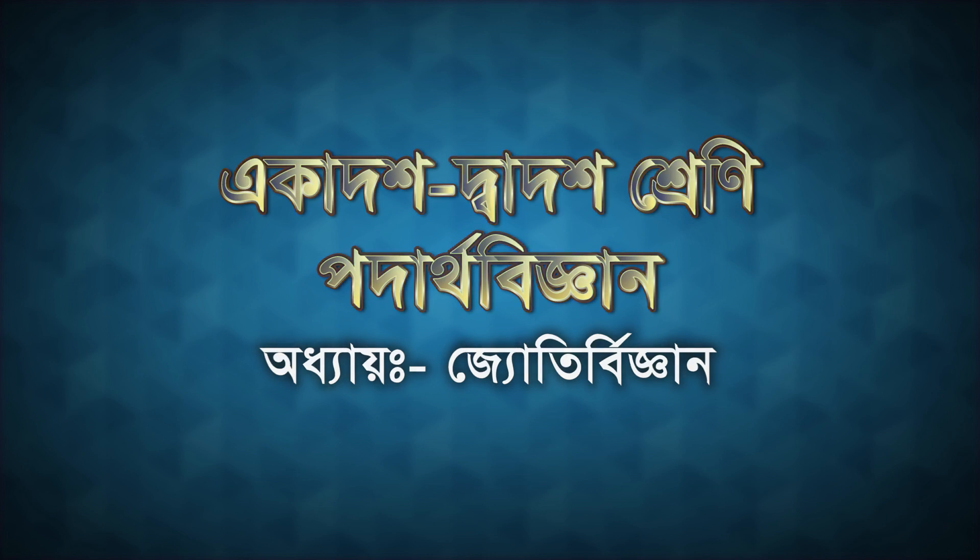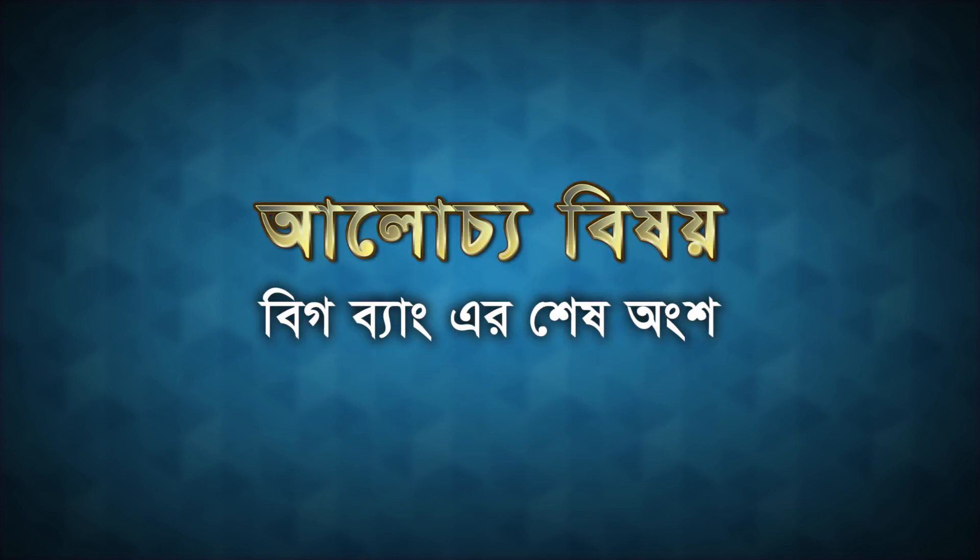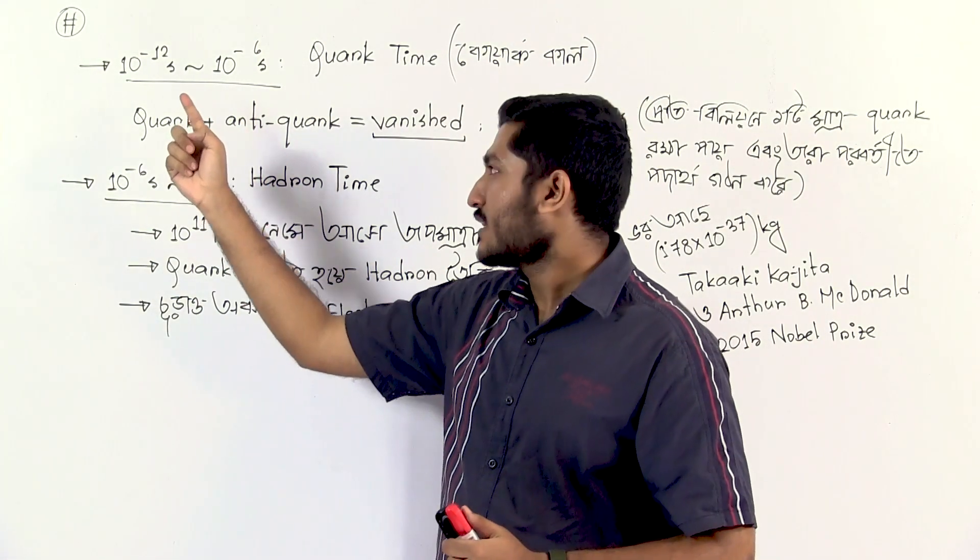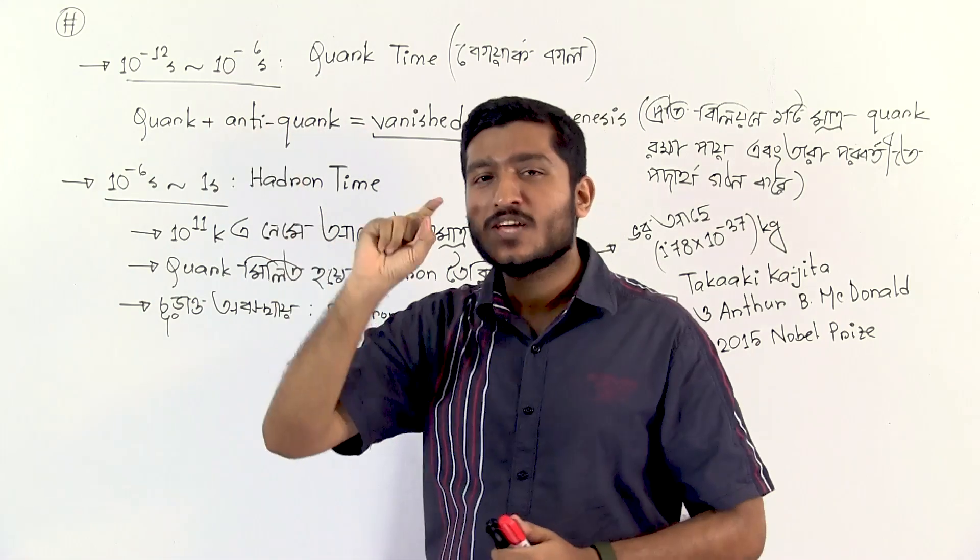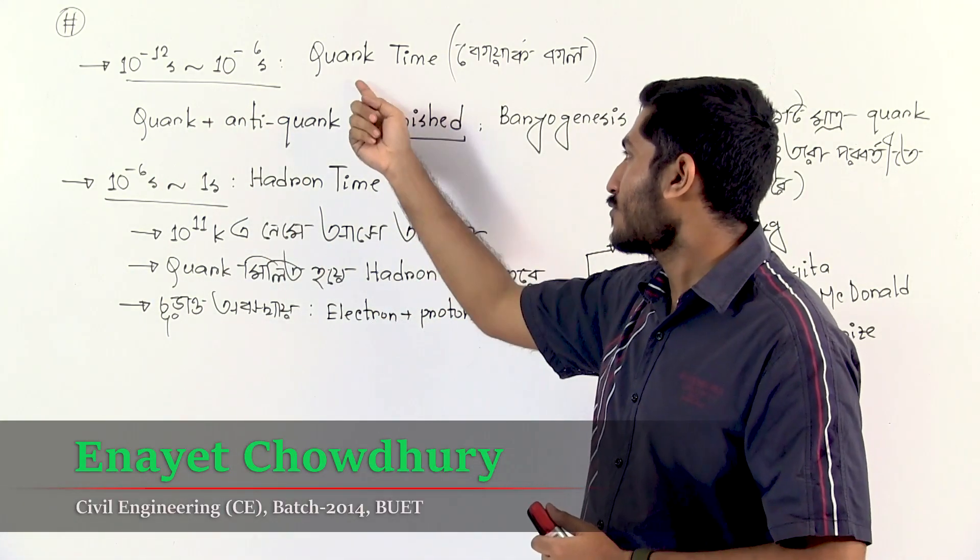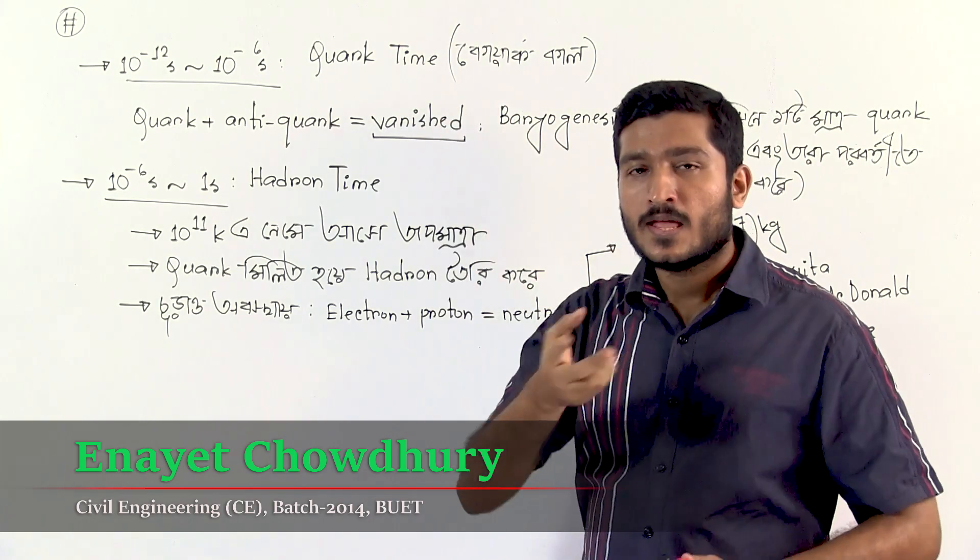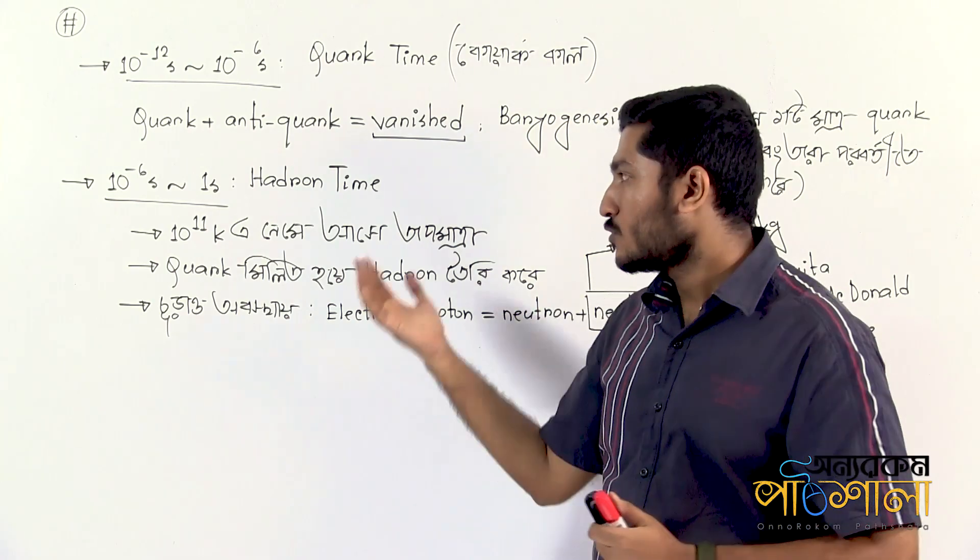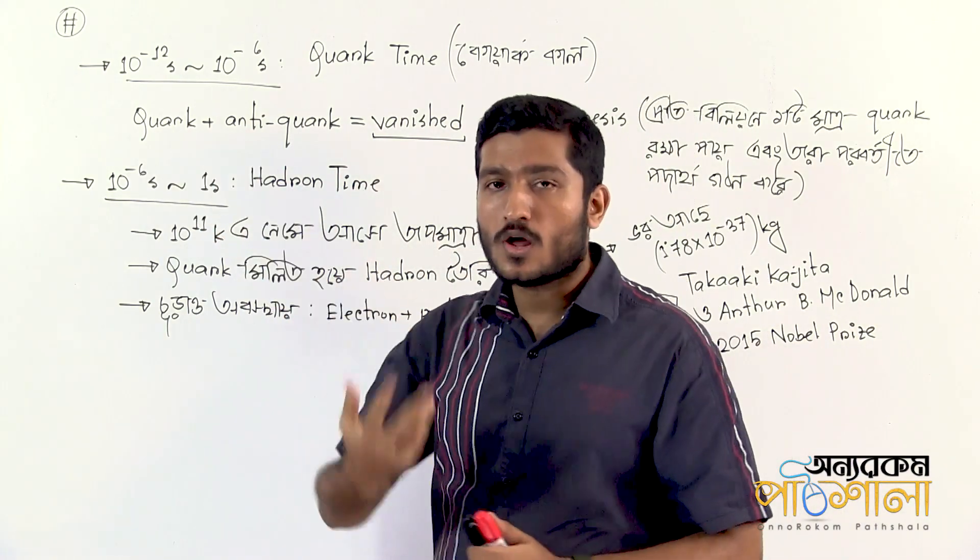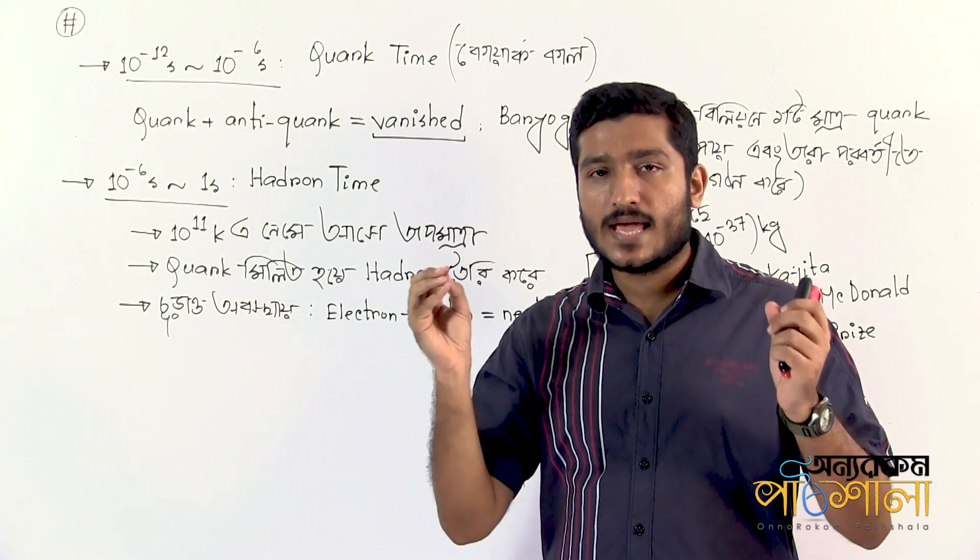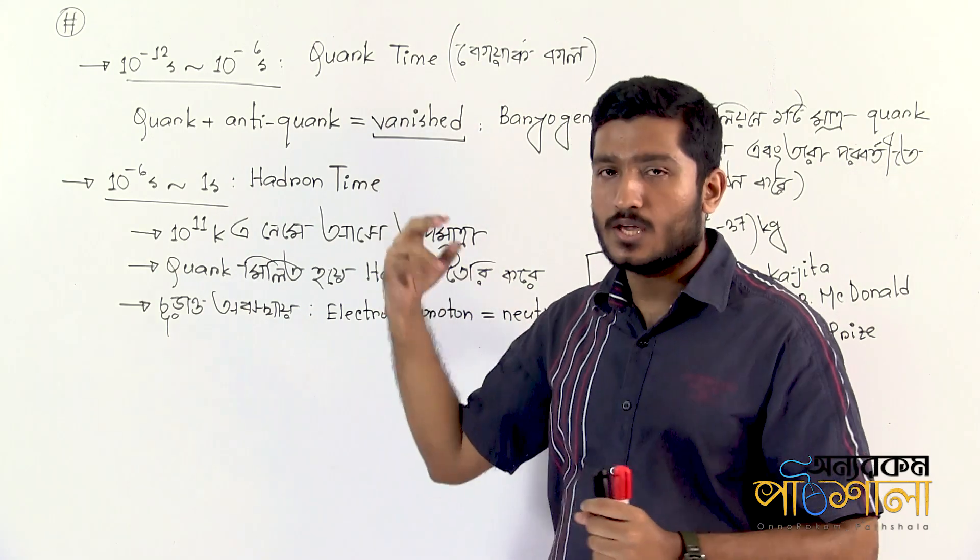The timeline spans from 10 to the power of minus 12 seconds to 10 to the power of minus 6 seconds. During this period, called quark time, quarks and anti-quarks existed. As we know, every quark has an anti-quark counterpart. These quark and anti-quark pairs would collide and vanish through annihilation.